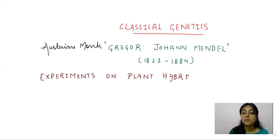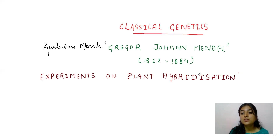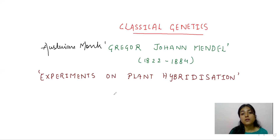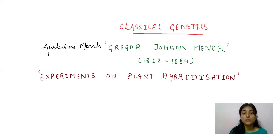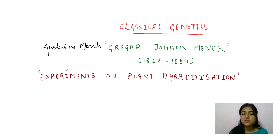He published this paper in a journal named the Proceedings of the Brno Society of Natural History. He published his work, but scientists did not accept it. This experiment was done in the year 1865.